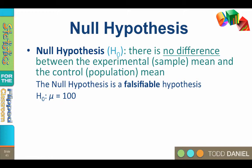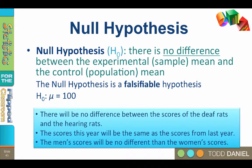Here are ways that you could write a null hypothesis: There will be no difference between the scores of the deaf rats and the hearing rats. The scores this year will be the same as the scores from last year. The men's scores will be no different than the women's scores.